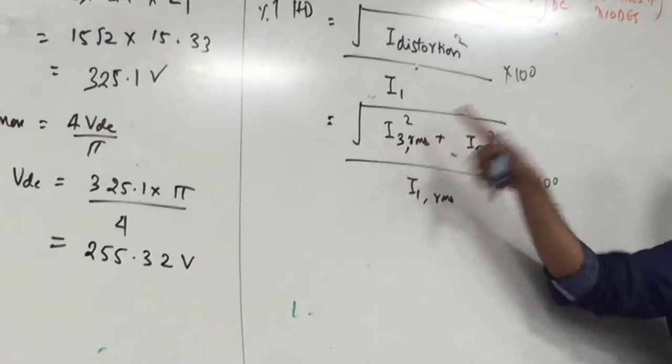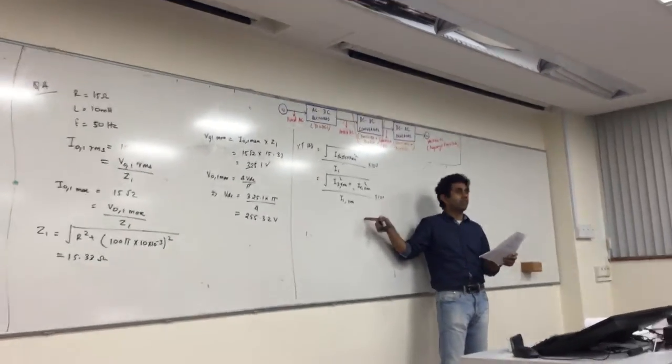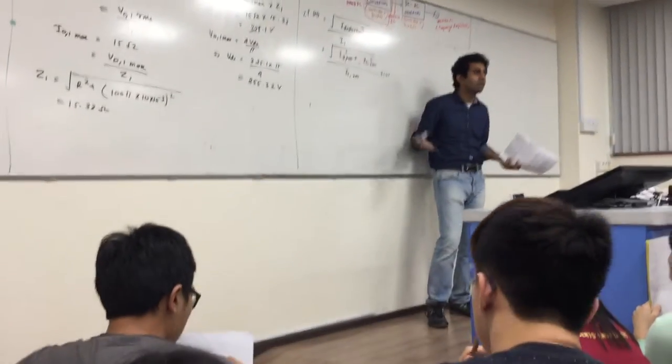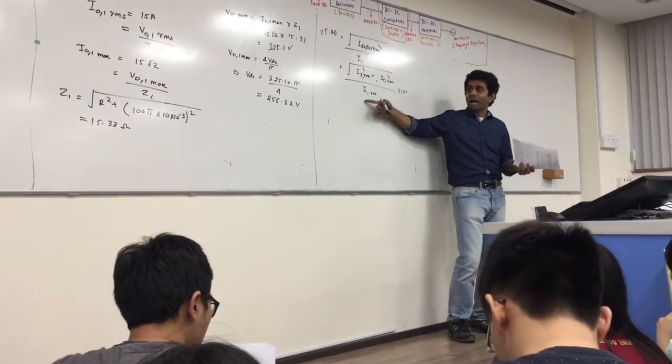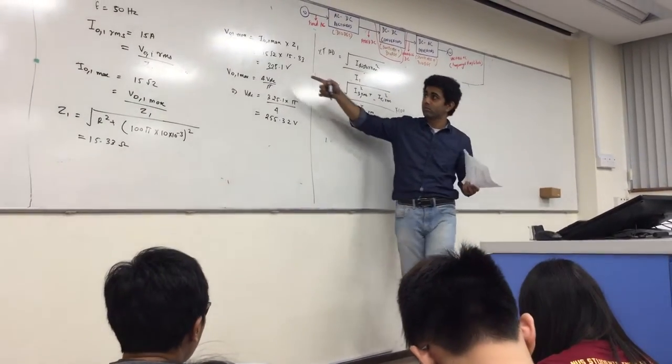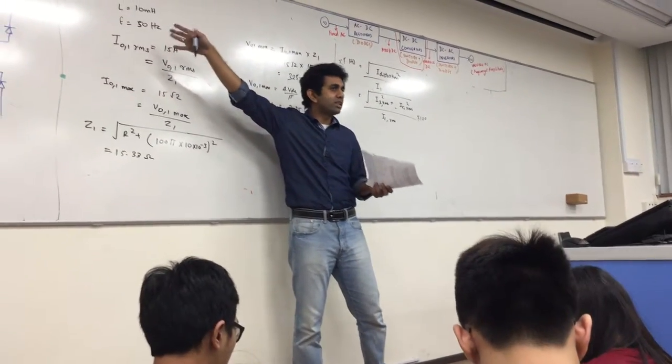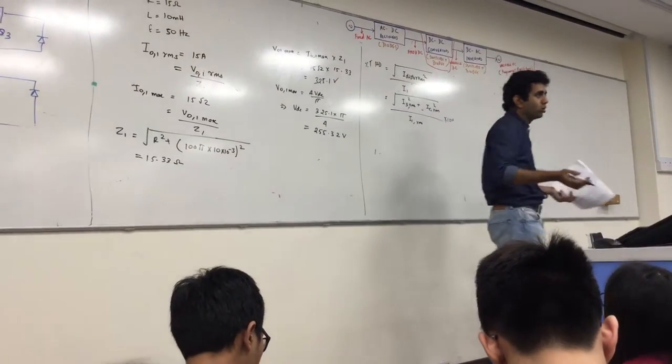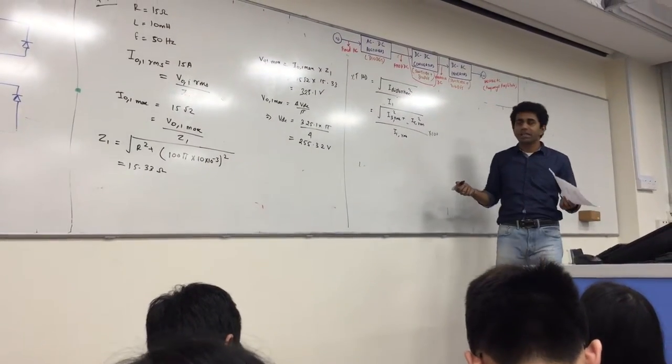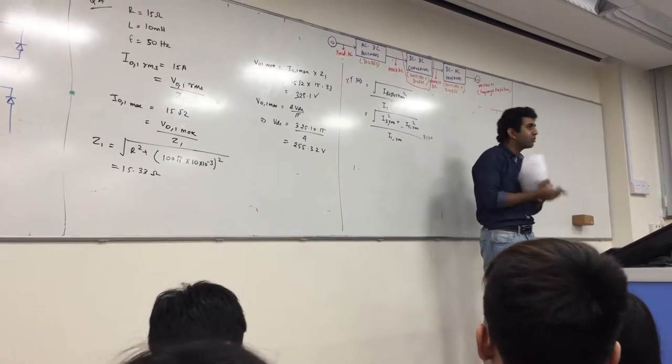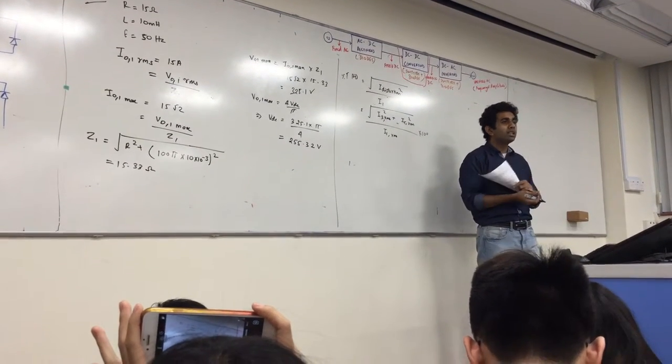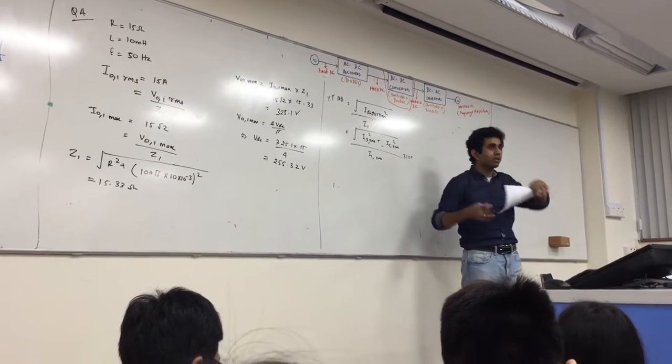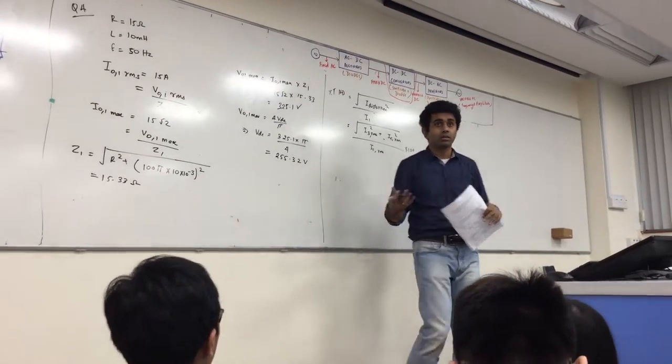These are all in RMS values, so I distortion square is going to be I3 RMS square plus I5 RMS square, by I1 RMS. You're going to have the distortion now - in our case, it's just a 3rd and a 5th harmonic. But I can find out V3 RMS, V5 RMS, I can find out Z3 and Z5, and then I can correspondingly find out what is my I3 RMS and my I5 RMS.